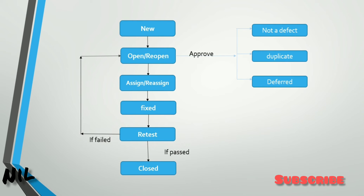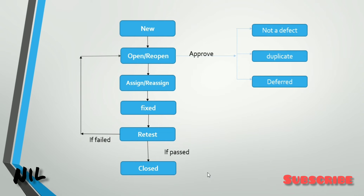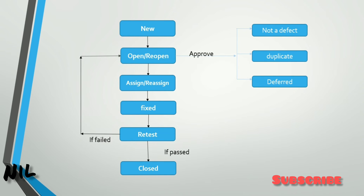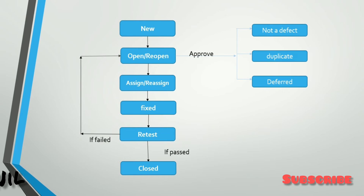Now let's look at Duplicate. What is a duplicate defect? It means there is an application that has been tested before, and a defect has already been found. If a tester reports the same defect again, it will be marked as a duplicate.